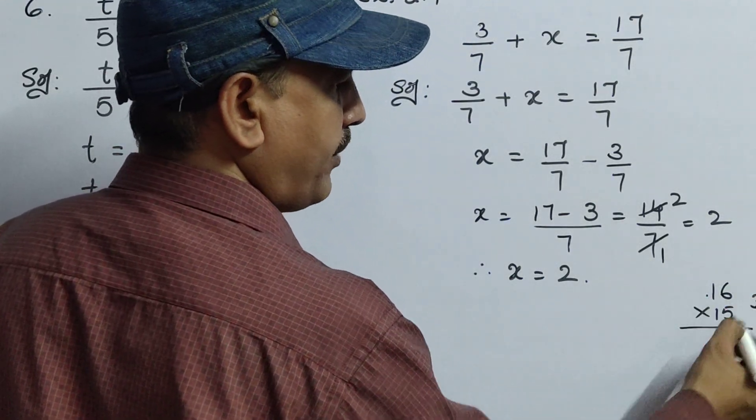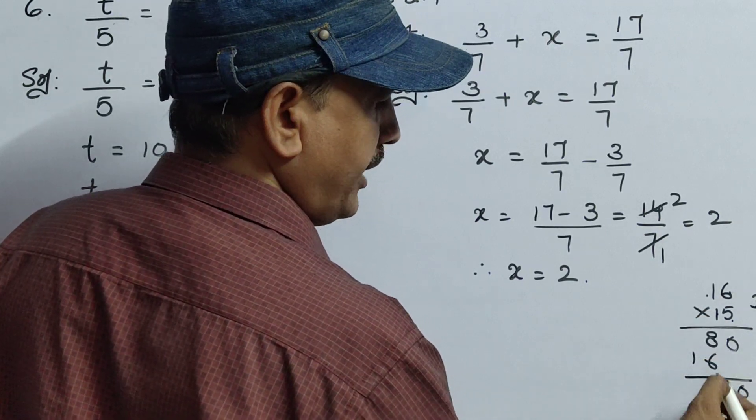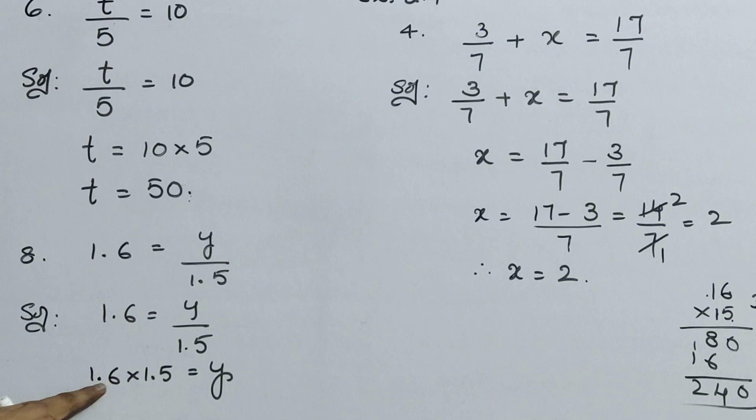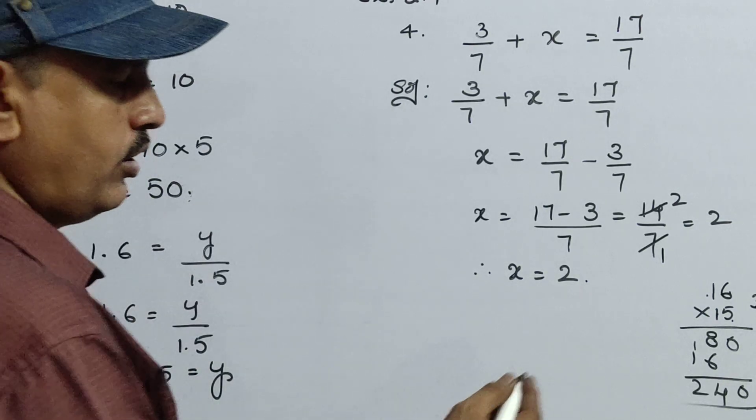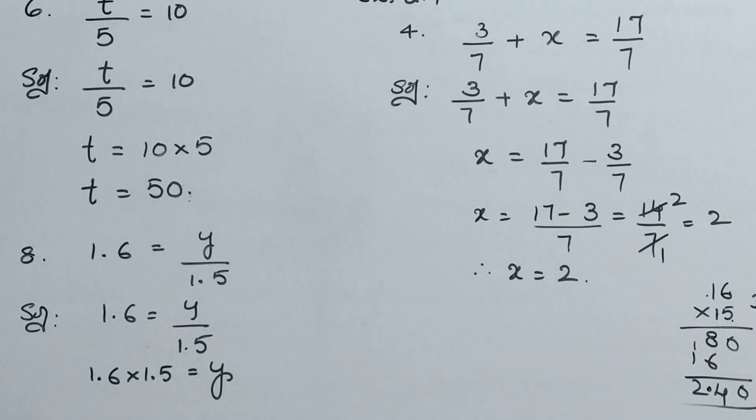First directly multiply 16 into 15 without decimal point. 5 sixes are 30, 5 ones are 5, 5 plus 3 is 8. 1 six is 6, 1 one is 1. So 8 plus 6 is 14. So 240 you got. Now here if you observe, decimal after one number and decimal after one digit. Total how many digits? 2 digits. So from right to left, leave two digits: 1, 2. That means 2.40. Therefore y equals to 2.4.